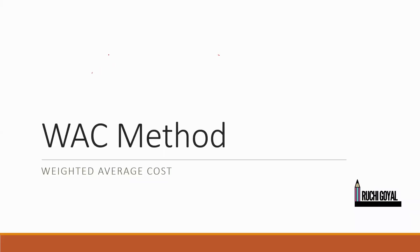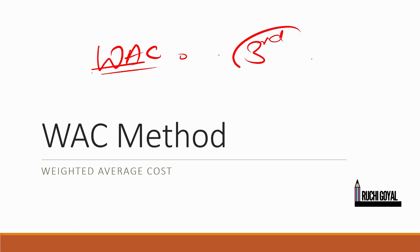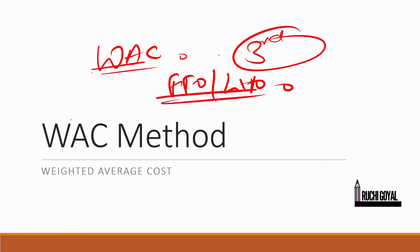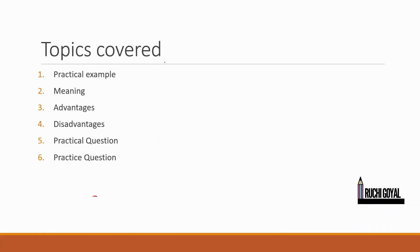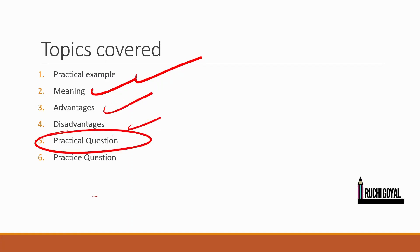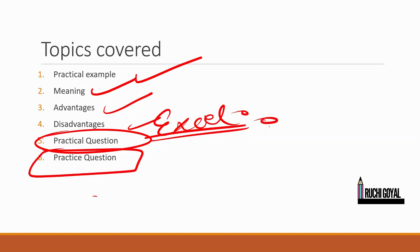Good morning guys, welcome back to my channel. Today we are going to do the weighted average cost method. This is the third and last method of inventory valuation. Till now we have covered the FIFO method and the LIFO method. Topics we'll cover include a practical example, the kinds of industries that follow this method, the basic meaning and assumption, advantages and disadvantages, and we'll solve one practical question in Excel. At the end I'll give you a practice question.